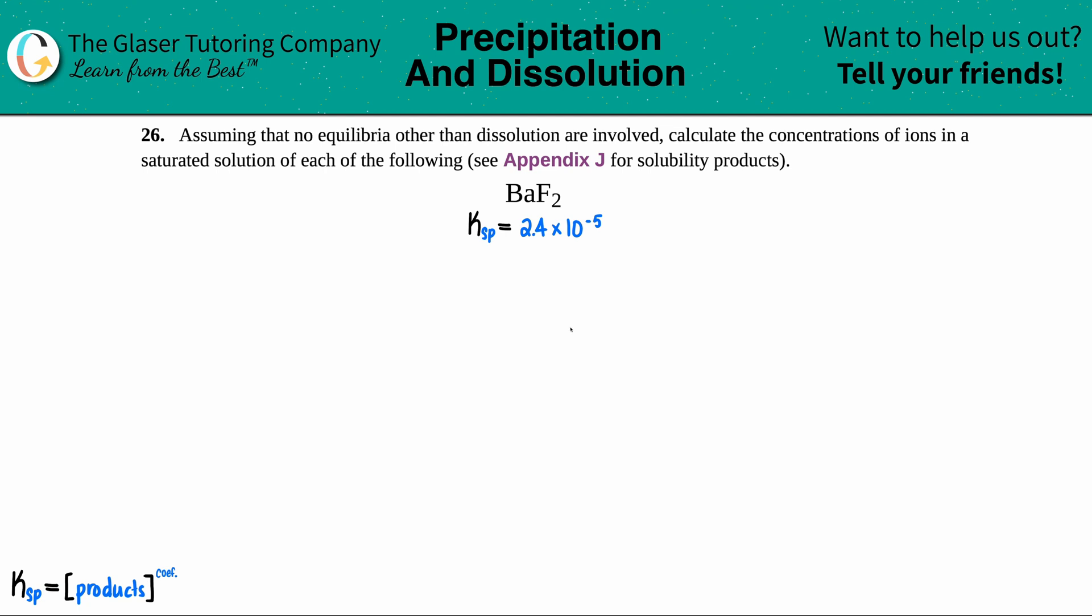Number 26. Assuming that no equilibria other than dissolution are involved, calculate the concentrations of the ions in a saturated solution of each of the following, and then see appendix J for solubility products. And then we have barium fluoride.